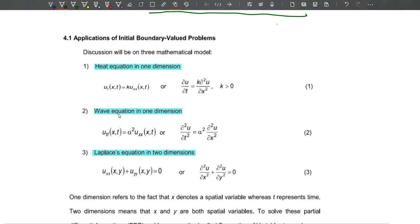Next is the wave equation in one dimension. We have this formula: u_tt(x,t) equals alpha squared times u_xx(x,t), which is the same as del squared u over del t squared equals alpha squared times del squared u over del x squared.